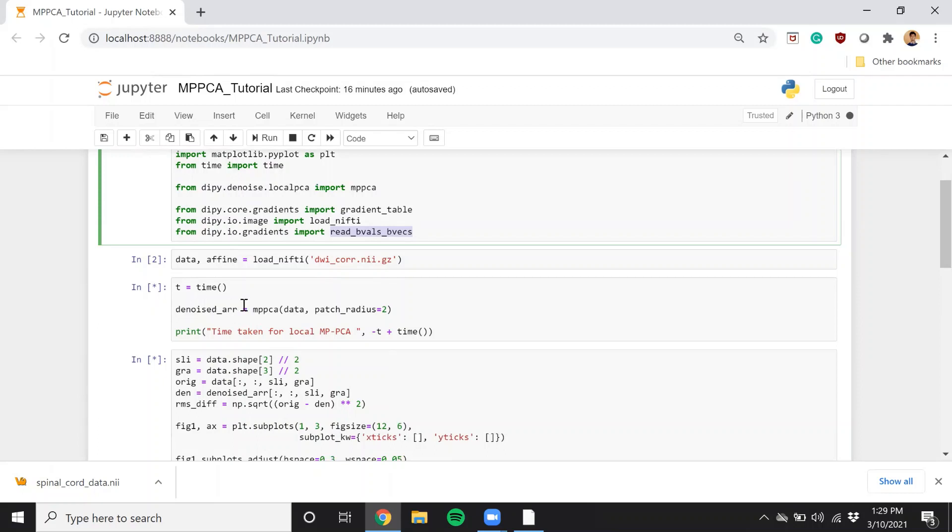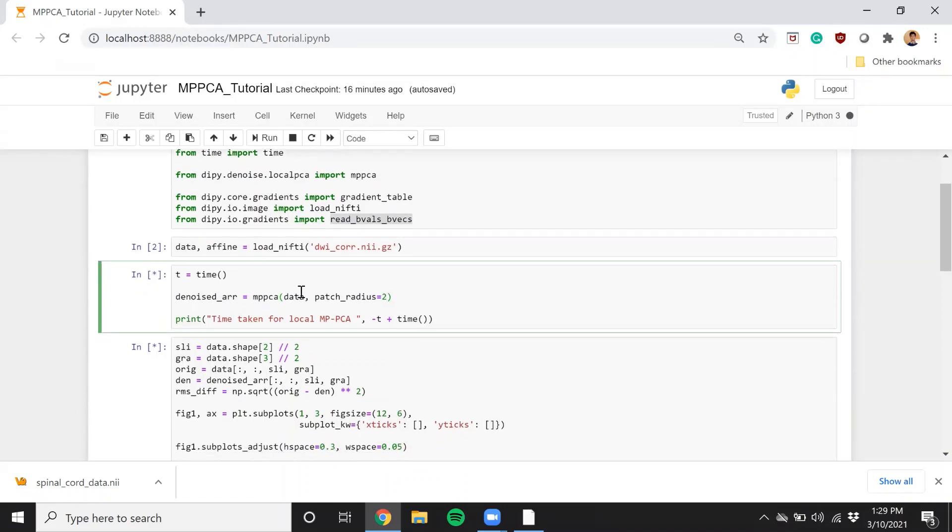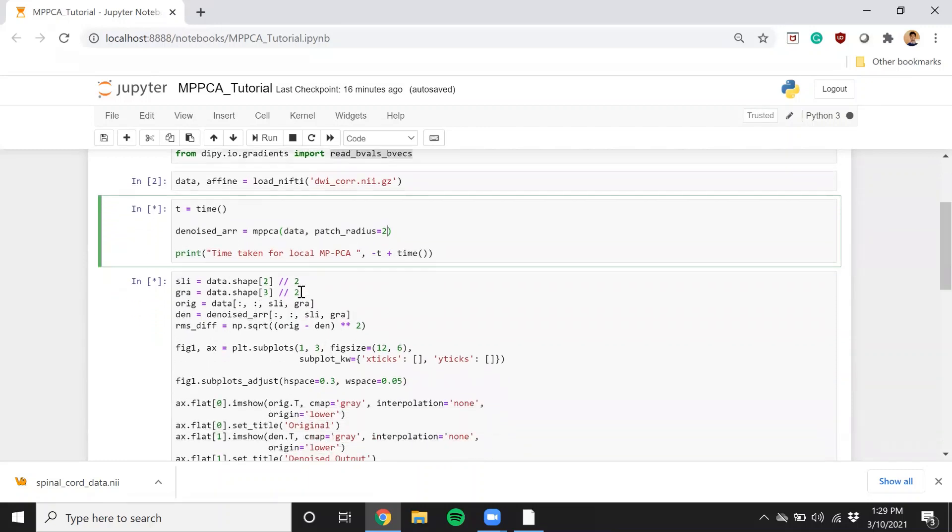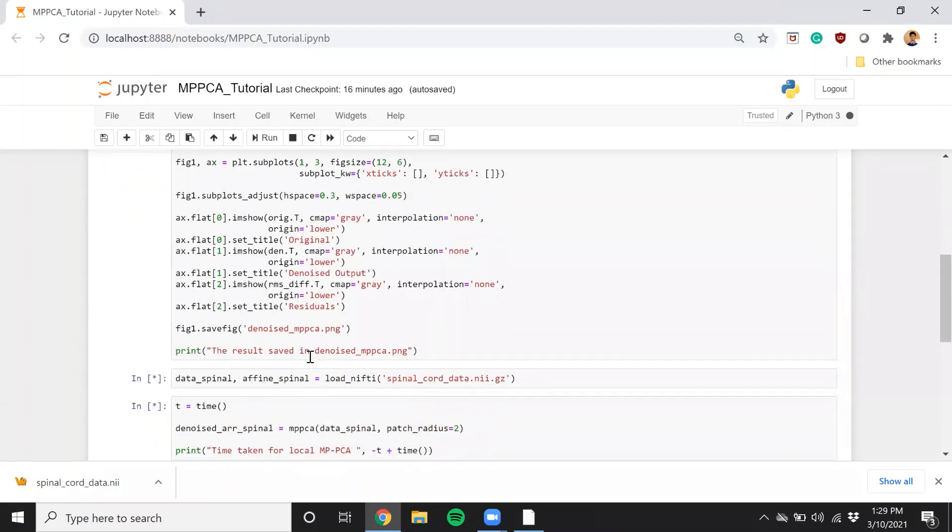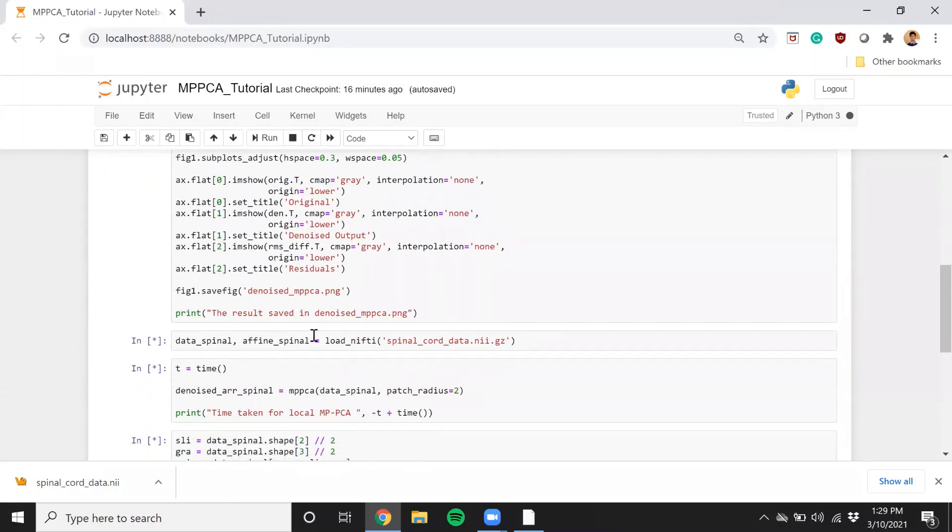To run MPPCA, all you need to do is call this one command. Here you need to change the patch radius as per your data size. For now, I have picked out a subject from the PPMI dataset, the Parkinson's dataset. It is a control subject as per the standard DTI protocol. So it has, I think, 1 B0 and 64 gradient directions, all at b-value 1000. And here is just a way of visualizing it in Matplotlib. You can find this code even on the DiPy website under tutorials.